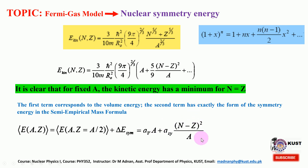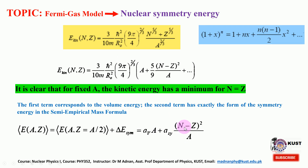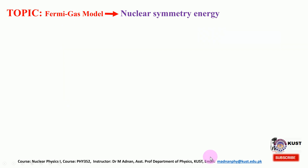In our binding energy expression for the semi-empirical mass formula this term is negative, but in the kinetic energy expression it is positive. This asymmetry energy — the energy associated with the difference in proton and neutron number — increases the system energy, and this can be derived using the Fermi gas model.